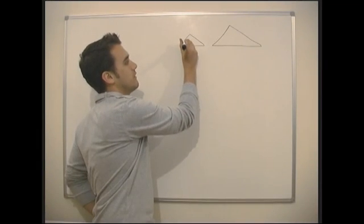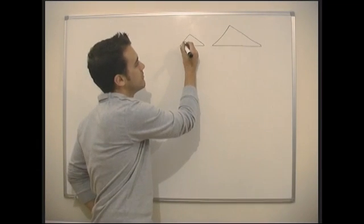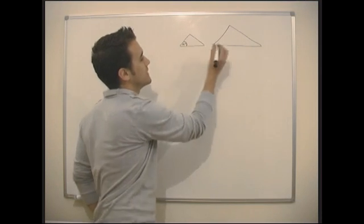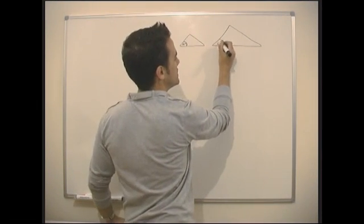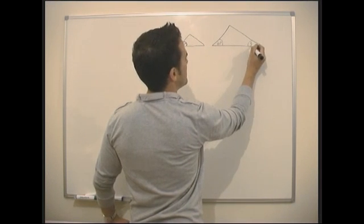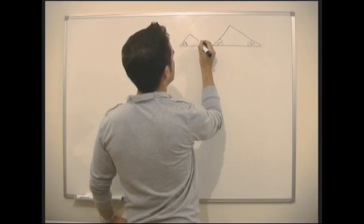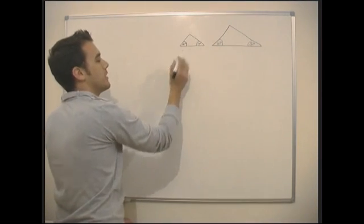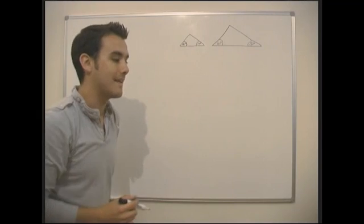Because this angle might be 40 degrees, this angle then would still be 40 degrees. This angle would be 32 degrees, and this angle would be 32 degrees. Now we know that they're similar.